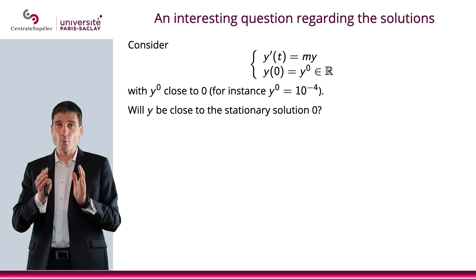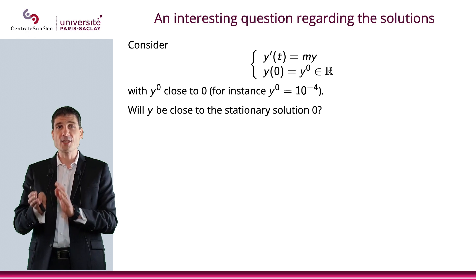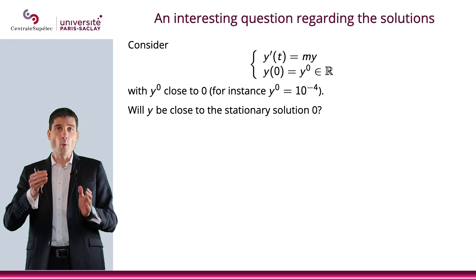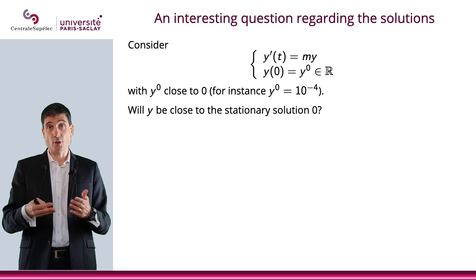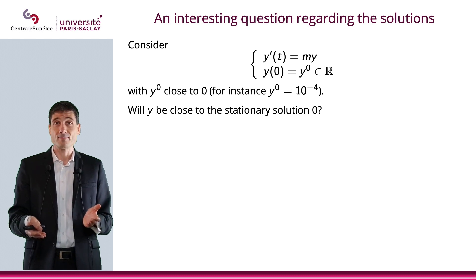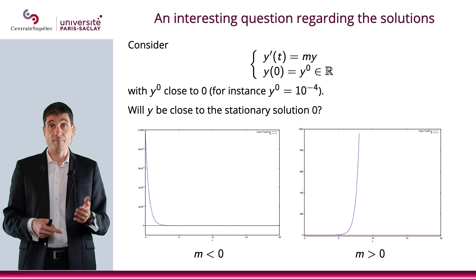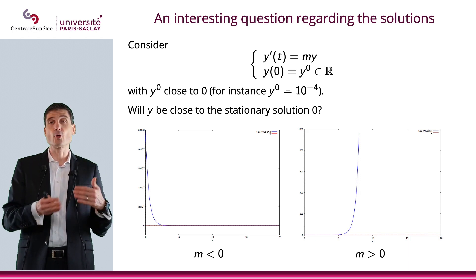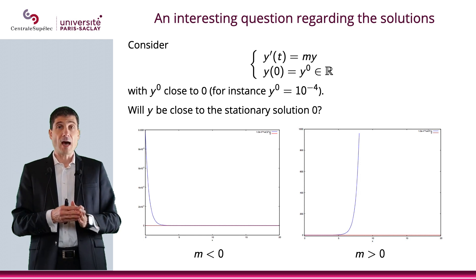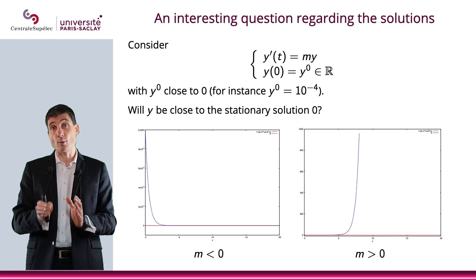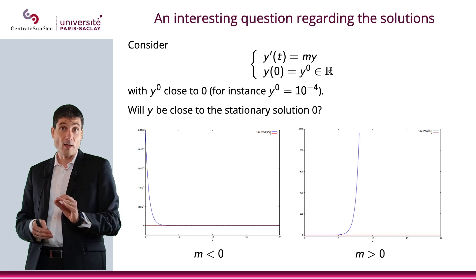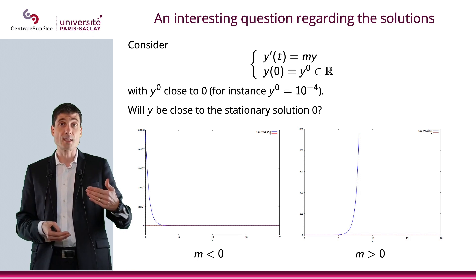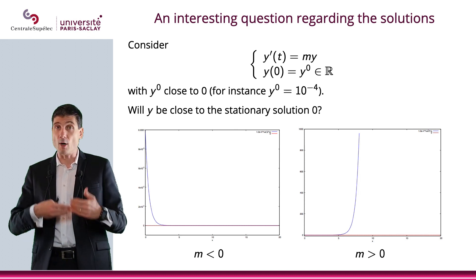There is an interesting question. Say you start with y0 which is not 0, but close to 0 — say 10^(−4), or even 10^(−100). Will the solution to the IVP stay close to the stationary solution 0, or not? The answer depends on m. If m is negative, yes — the solution will stay close to the stationary solution; in fact, even if you don't start close to 0, it will converge. However, if m is positive, no matter how close you start from 0, if y0 is not exactly 0, your solution will not stay close to the stationary solution — it will blow up and go to plus infinity.